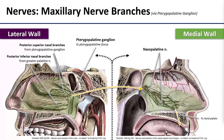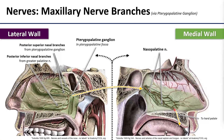The pterygopalatine ganglion gives off many of the maxillary nerve branches directly, including all the palatine nerves and posterior nasal branches — posterior superior and posterior inferior. Just like the bulk of the sphenopalatine artery crossed over to the septum, the nasopalatine nerve does the same, running with the artery anteriorly and inferiorly across the nasal septum, through the incisive canal and out the incisive foramen to supply the anterior hard palate.